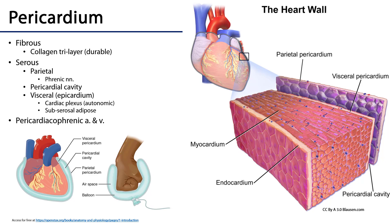Deep to the fibrous pericardium is the serous pericardium, which you can think of as a balloon — the metaphor used to explain any serosal membrane. Imagine blowing up a balloon and punching your fist into it so the balloon deforms around your fist. The part of the balloon immediately touching your fist is the visceral layer of the serous pericardium, and the part not touching anything is the parietal layer. The space between them is the pericardial cavity.